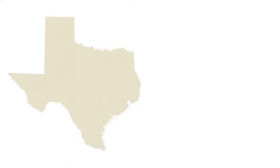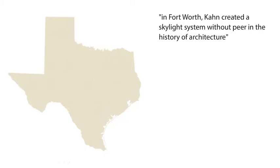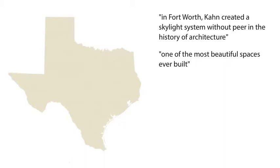Our next example is the Kimball Art Museum located in Texas. David Brownlee and David De Long, authors of 'Louis I. Kahn: In the Realm of Architecture,' declare that in Fort Worth, Kahn created a skylight system without peer in the history of architecture. Robert McCarter, author of 'Louis I. Kahn,' says the entry gallery is one of the most beautiful spaces ever built, with its astonishing ethereal silver-colored light. Carter Wiseman said that the light in the Kimball gallery assumed an almost ethereal quality and has been the distinguishing factor in its fame ever since.